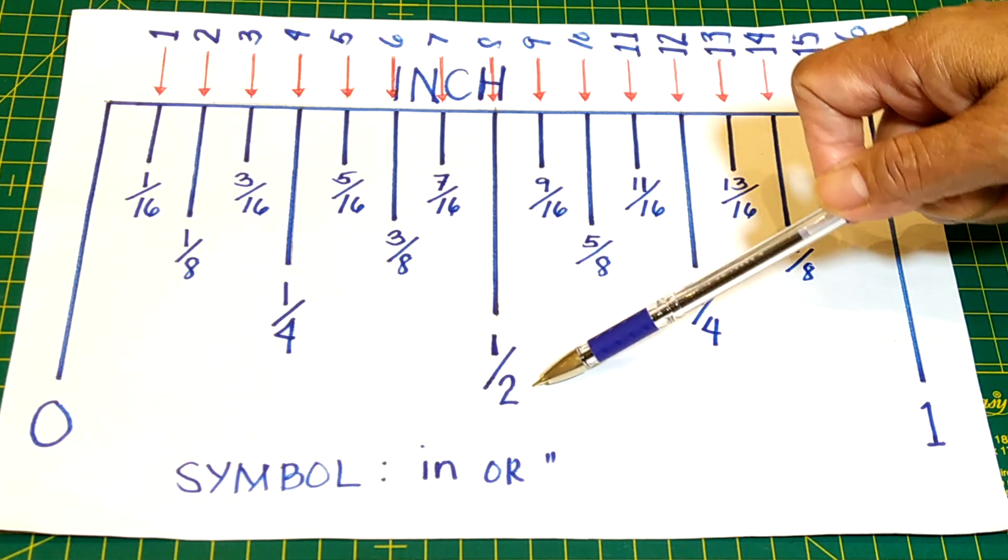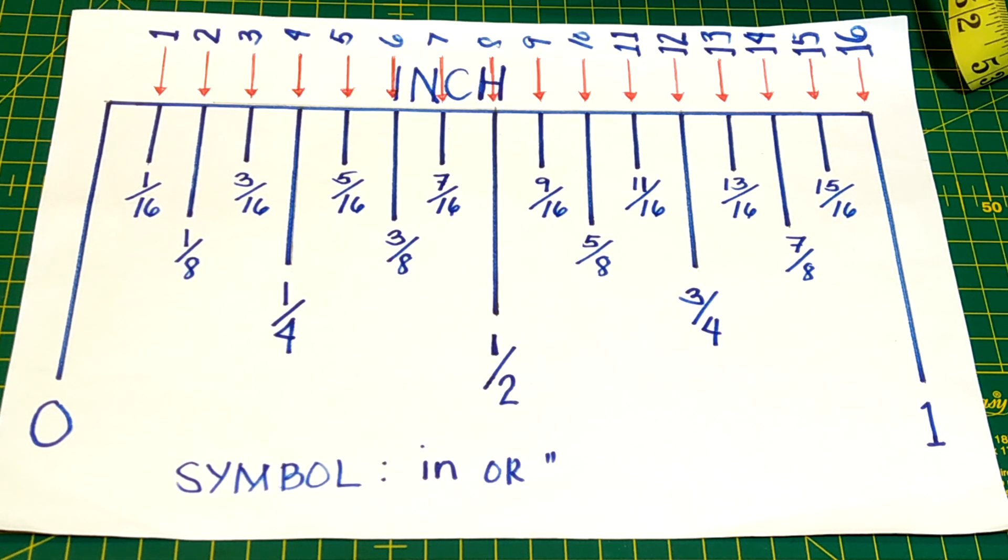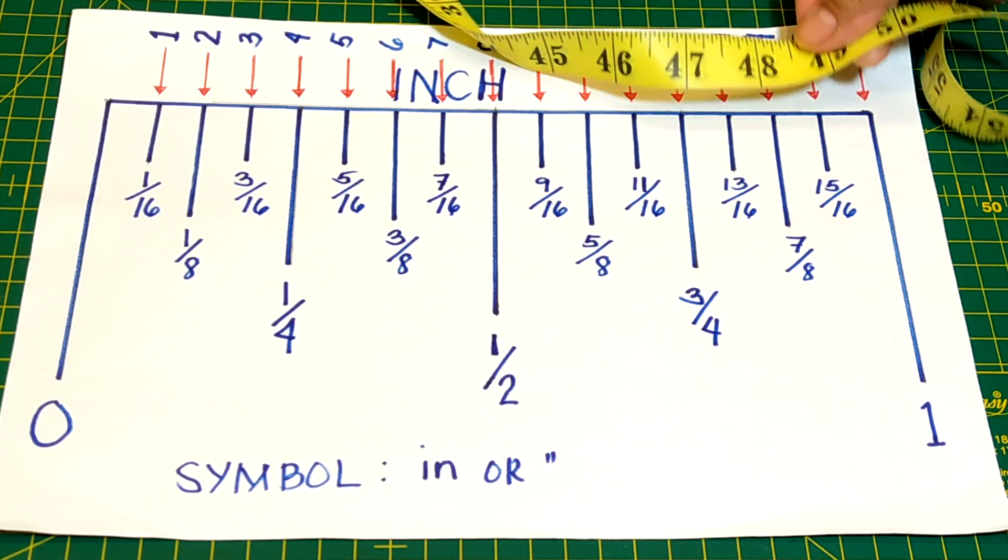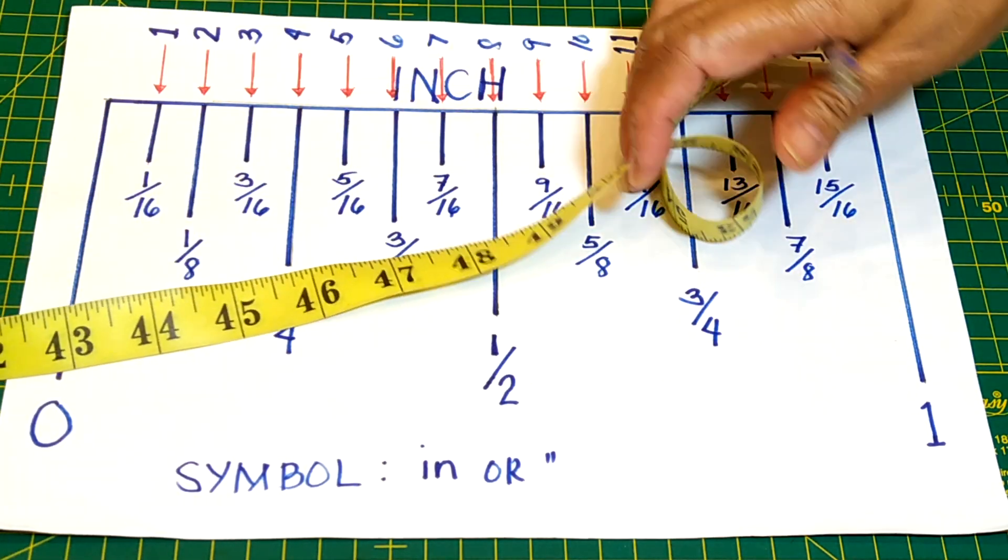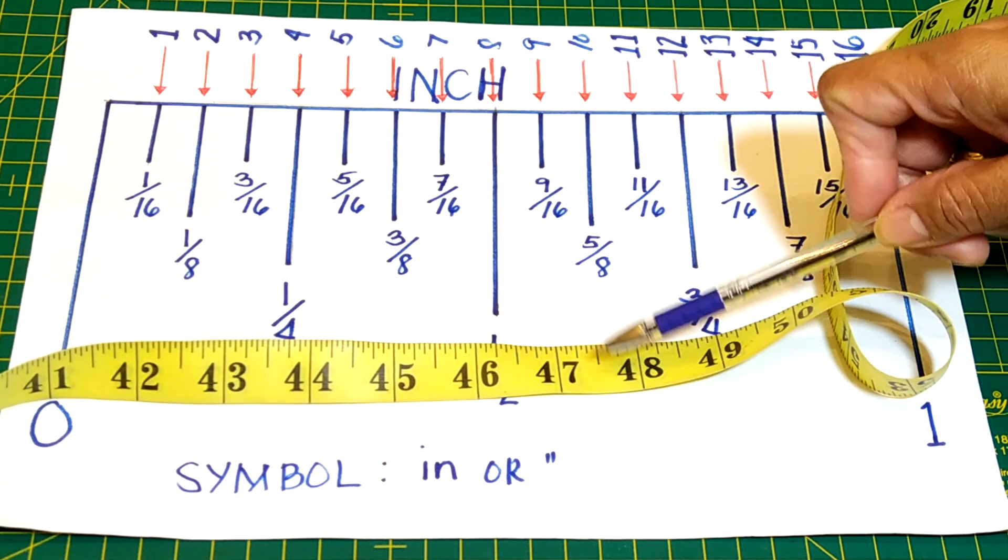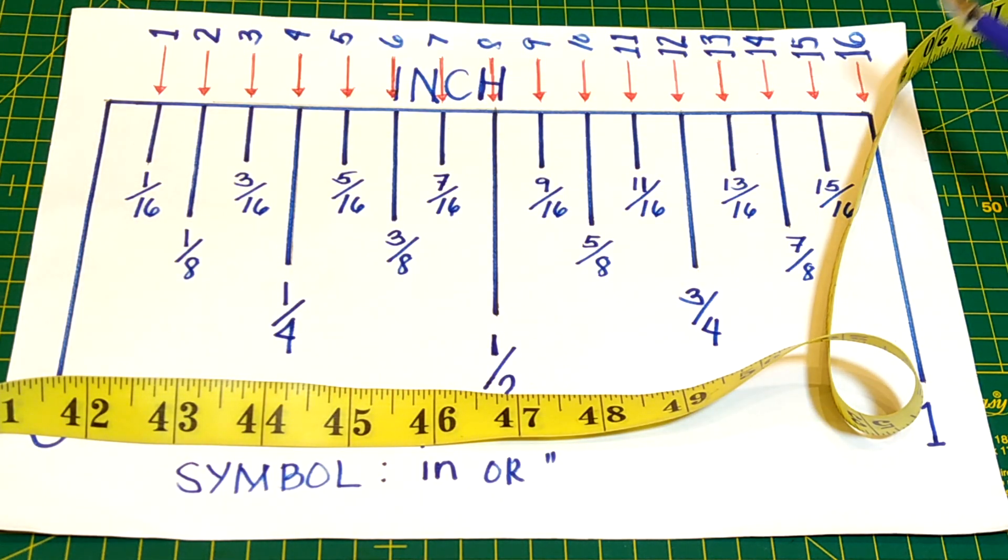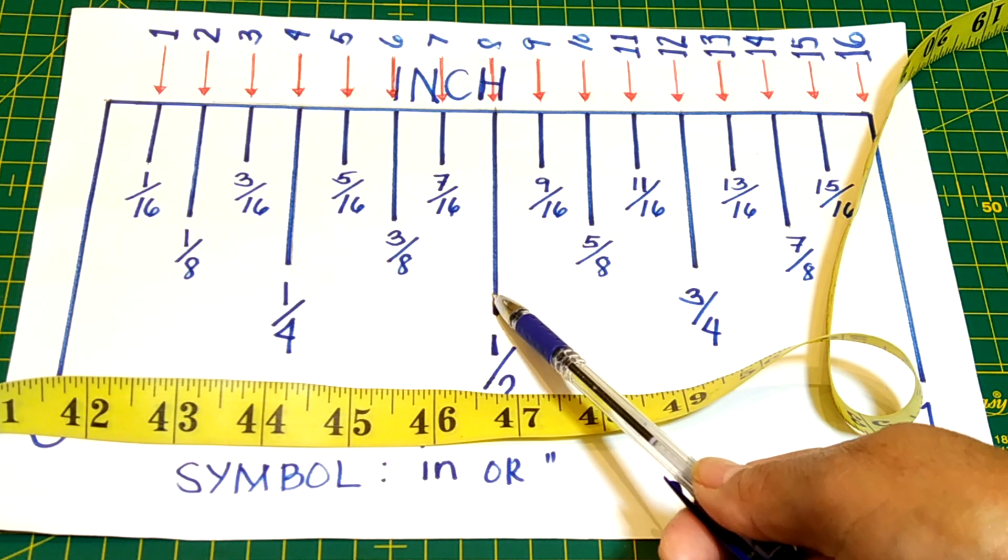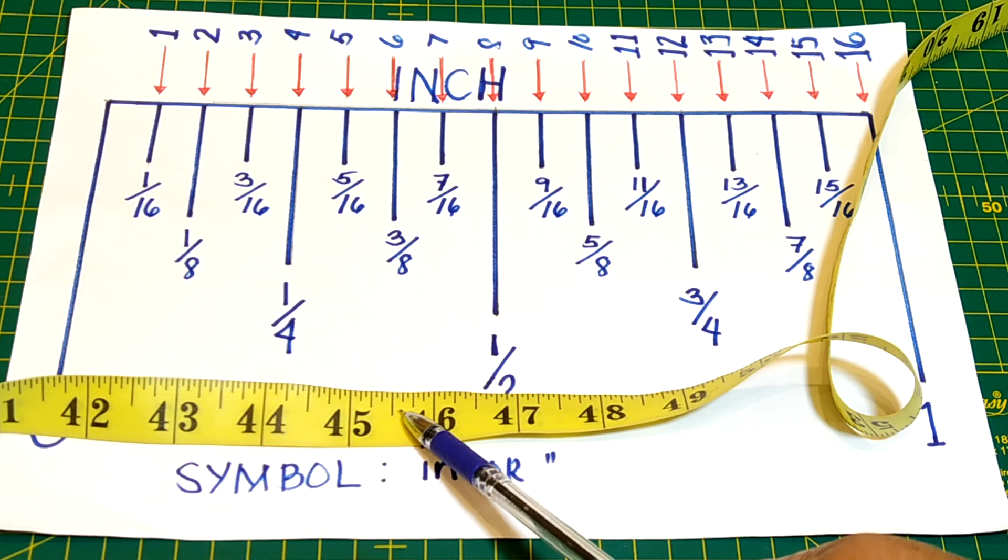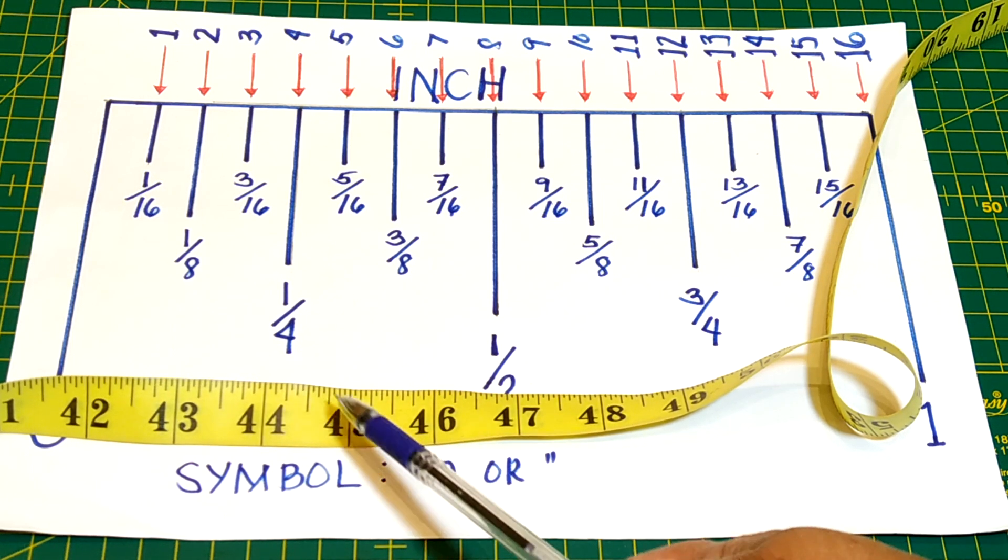8/16 or one half, one half of the ruler or one half of an inch. This mark, this line, is midway of the inch, from here to here. We call it one half or 8/16.